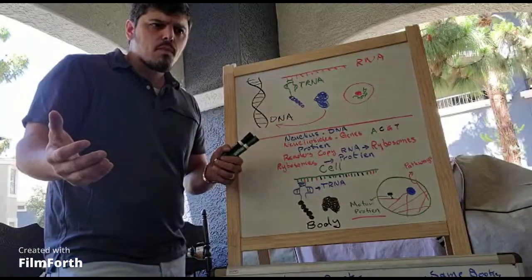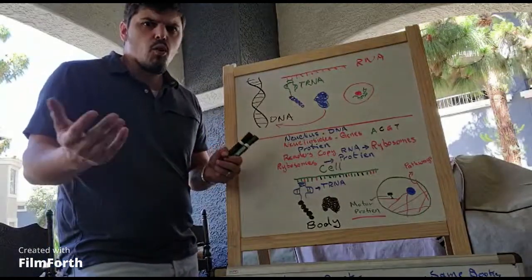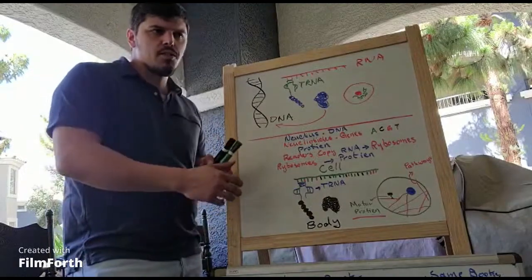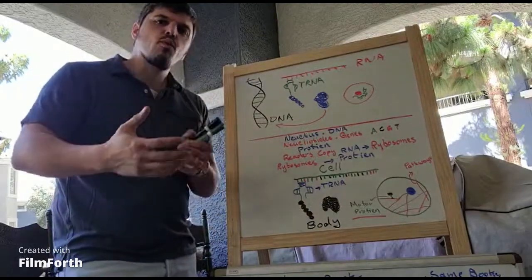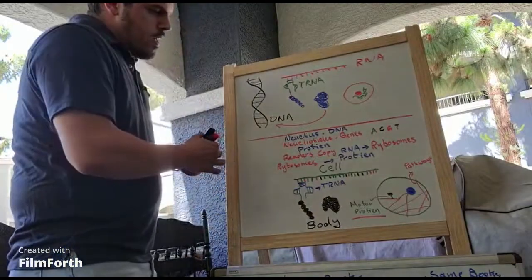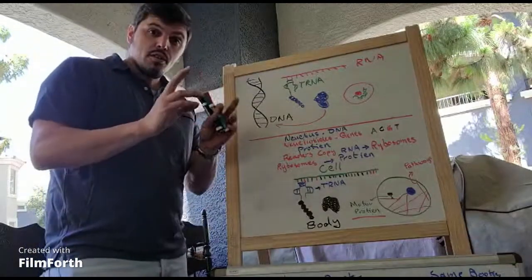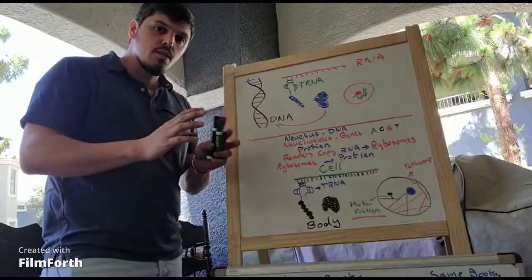Some of them are proteins that are for hormones. Others are skin cells. Others are proteins that form different things. So, that's where our steel, our stone, and so on would come along.